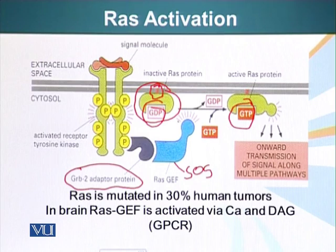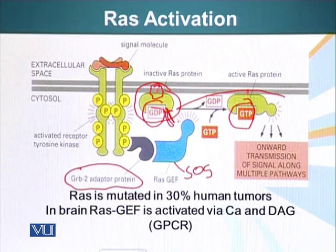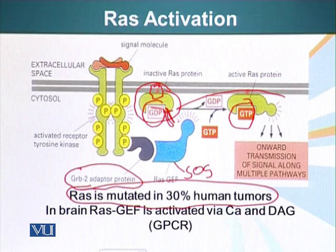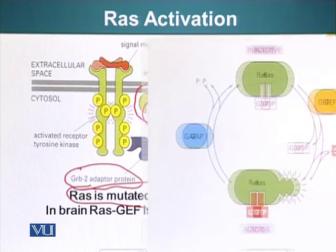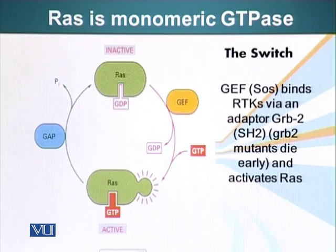RAS-GEF activates RAS. When RAS is activated, it can do several things, which we will discuss later. It is important to mention that this type of signaling results in cell proliferation, cell division, or survival. RAS is mutated in 30% of human tumors or cancers, because these signals are telling cells to divide — and uncontrolled cell division is essentially cancer. Any mutation in RAS can result in cancer.